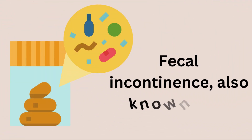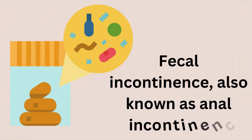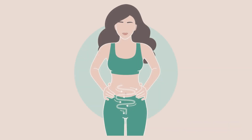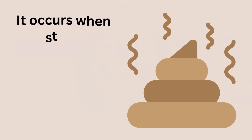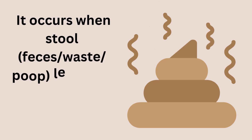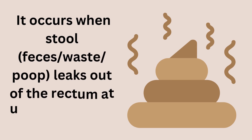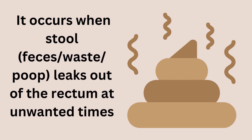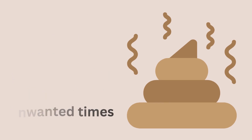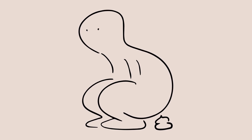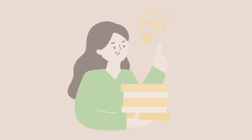Fecal incontinence, also known as anal incontinence, refers to the inability to control bowel movements. It occurs when stool, feces or poop, leaks out of the rectum at unwanted times, such as outside of planned bathroom breaks.